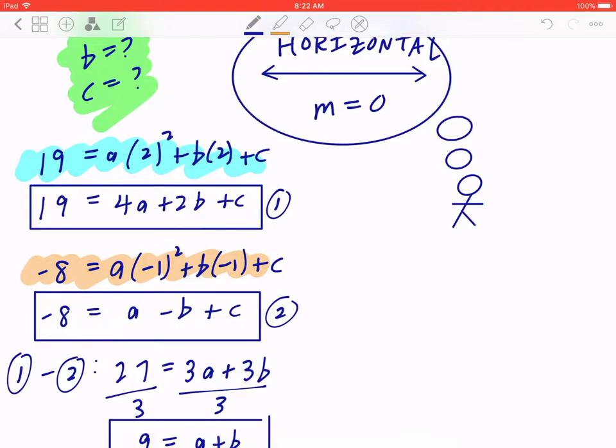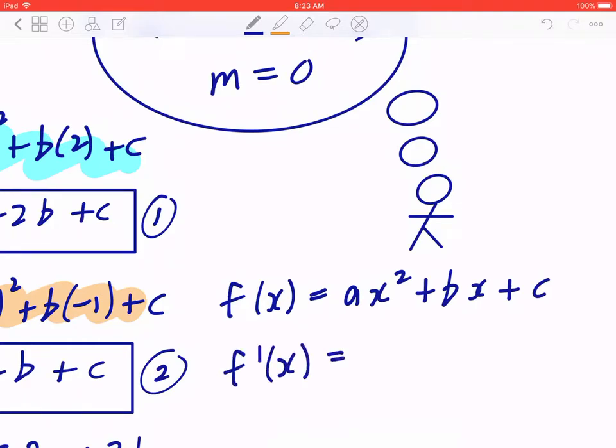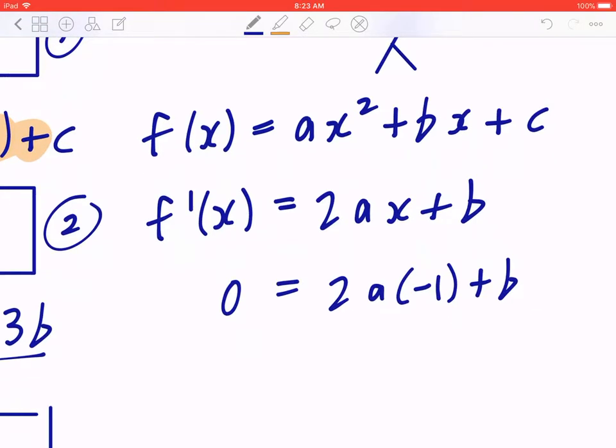So back to the first idea. The fact that the horizontal tangent implies that the slope is going to be 0. This means if you start with the function f of x, which is ax squared plus bx plus c, you can find the general slope. f prime equals 2ax plus b. And again, the horizontal tangent occurs at x equal to negative 1. So you have to plug in negative 1 for x. And the slope is going to be 0. So this will give you 0 equals negative 2a plus b. Again, let's put a box around this.